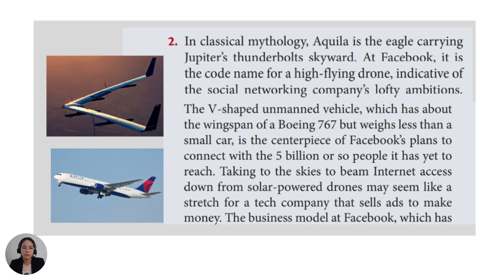We have another example. In classical mythology, Aquila is the eagle carrying Jupiter's thunderbolts skyward. At Facebook, it is the code name for a high-flying drone, indicative of the social networking company's lofty ambitions. The V-shaped unmanned vehicle, which has about the wingspan of a Boeing 767 but weighs less than a small car, is the centerpiece of Facebook's plan to connect with the five billion or so people it has yet to reach, by beaming internet access down from solar-powered drones. As you can see in the image, this is Facebook's Aquila — it is a V-shaped unmanned vehicle, a flying drone.